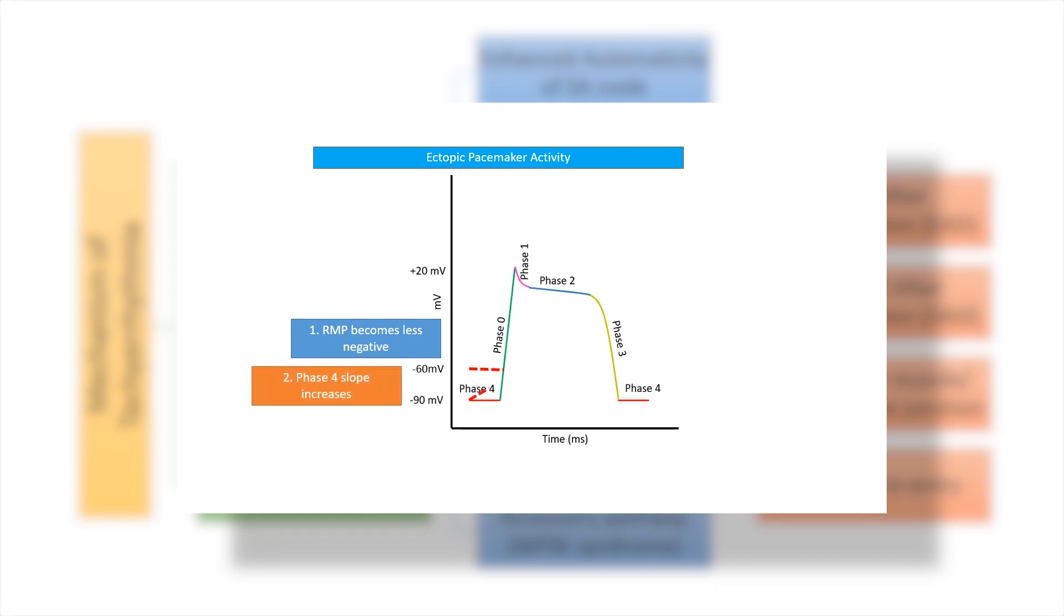Ectopic pacemaker activity from atrial, ventricular, or Purkinje fibers can occur when resting membrane potential becomes less negative, when phase 4 slope increases, or when the threshold potential for depolarization becomes more negative.